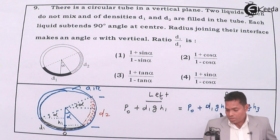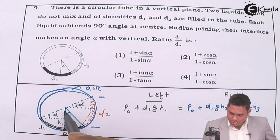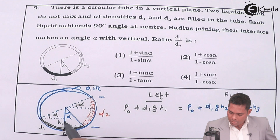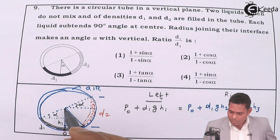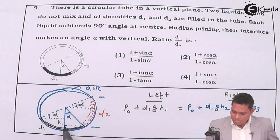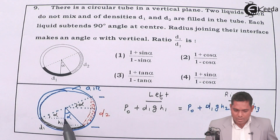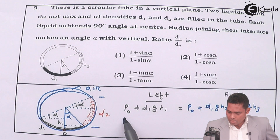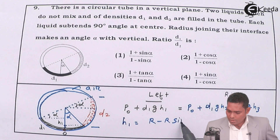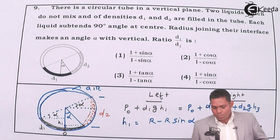Now our aim is to find h1, h2, and h3. h1 is the vertical height from here to here. This total height minus this part gives h1 — that means r minus r·sin(α), so h1 = r − r·sin(α).